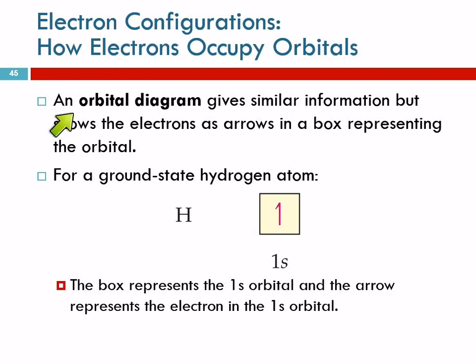Another way to do it is an orbital diagram. This is a little more like a picture. Here, we're showing electrons as arrows in a box. So, for hydrogen, here, this box is representing that 1s orbital, and I've drawn an arrow. It only has half of a head. That's the way they do it. One arrow in there, and that represents there's one electron in there.